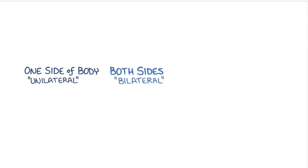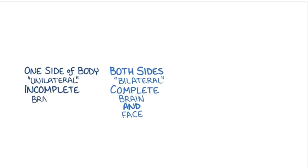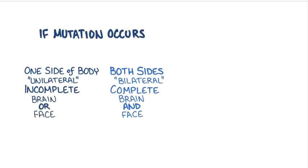It also accounts for whether it's complete, meaning it affects the brain and face, or incomplete, meaning that it affects just one or the other. For example, if the mutation happens very early in development, the syndrome will most likely be bilateral and complete. On the other hand, if it happens late in development, the disease will be unilateral and incomplete.